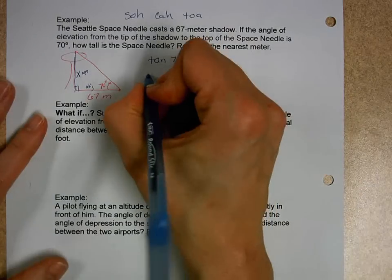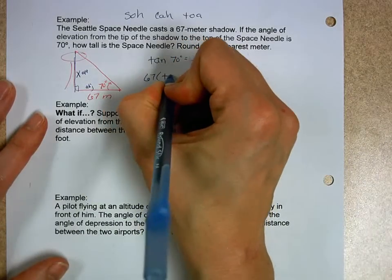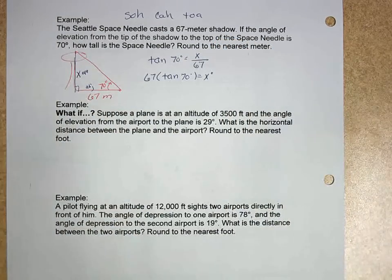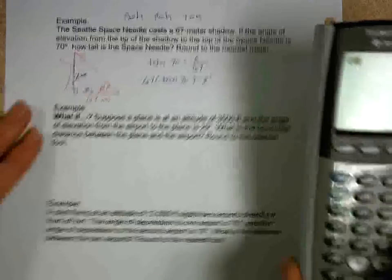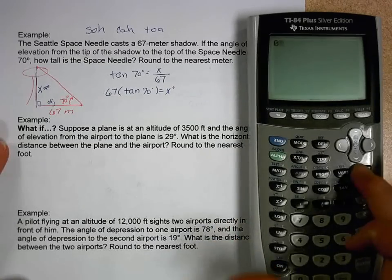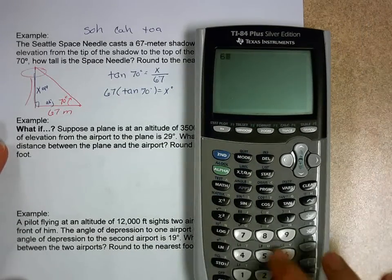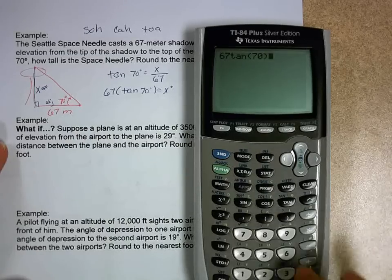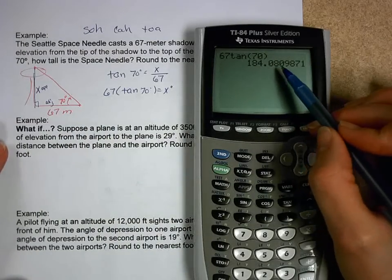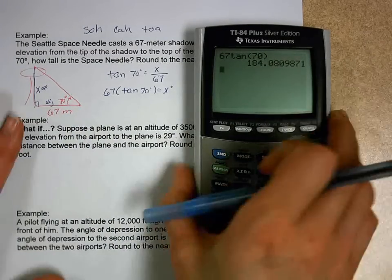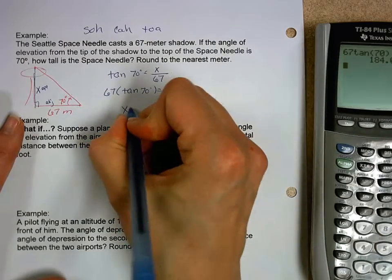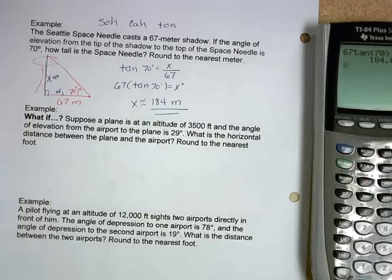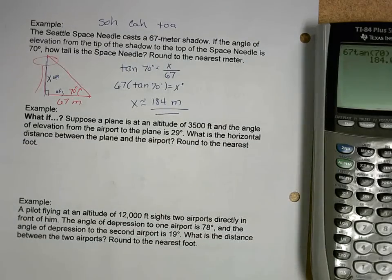Then we solve for this. Our next step is we multiply both sides by 67. That's what we've punched into our calculator. Now, round to the nearest meter, which means no decimals on this one. So 67 times the tangent of 70, I should have 184.08, but to the nearest meter, that's 184 meters tall.